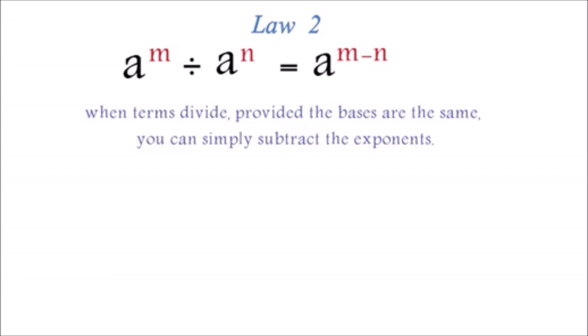Example: a exponent 5 divided by a exponent 3 equals a exponent 5 minus 3, which is equal to a squared. Here you'll see that we just subtracted the exponents.